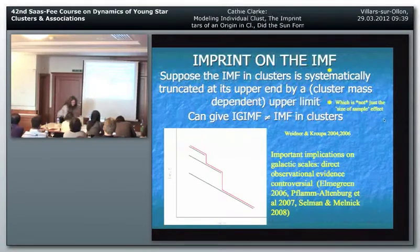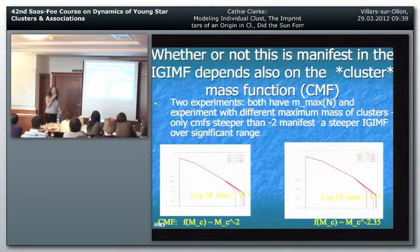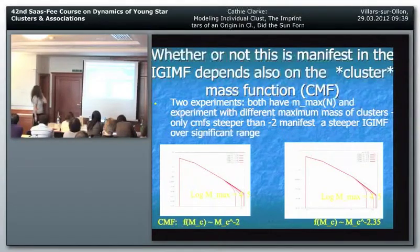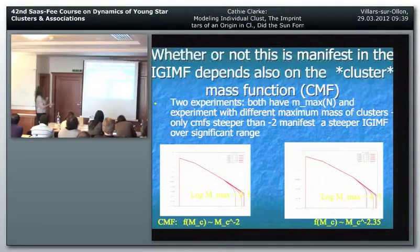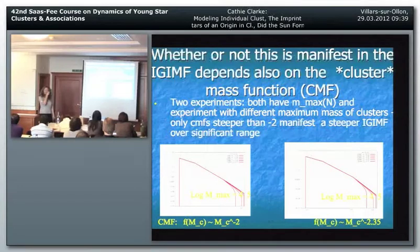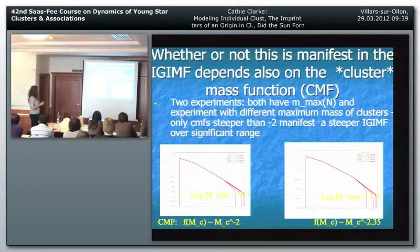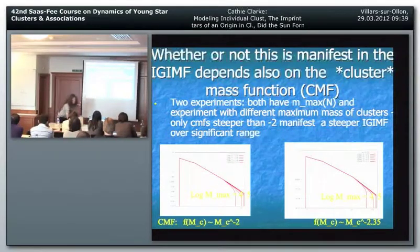Even if you do have this truncation effect, whether it's actually manifest when you add up all these clusters of different richness depends on the steepness of the cluster mass function. As long as the cluster mass function is steeper than minus two, you do get a steepening of the integrated IMF - because then you've got more small clusters, so the fact that they're truncated makes a difference to the integrated whole. But for M to the minus two or shallower, it actually doesn't make any difference. You can show all this analytically, and we know the slope is roughly minus two.